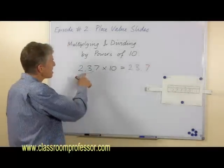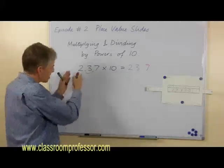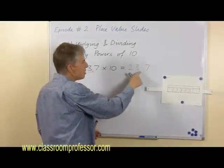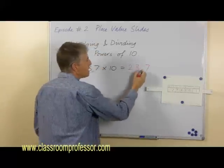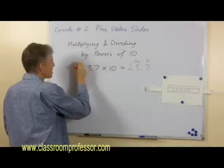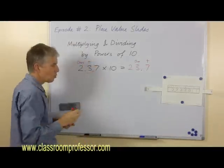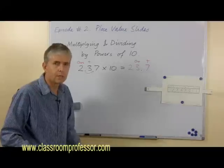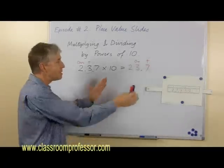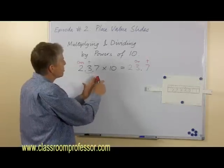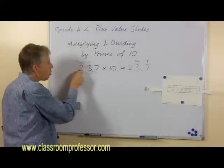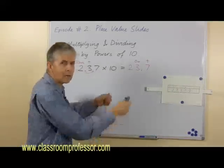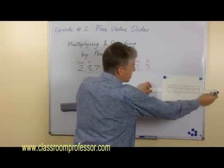Decimal points don't move. A decimal point is a marker between the whole part of a number — in this case the 2 — and the fractional part, in this case the 0.37 or the 3 tenths and 7 hundredths. When we get the new number 23.7, the decimal point is still between the ones and the tens, just as it was before. So really the decimal point didn't move. If we tell our students to just move the decimal point, we're not stating what's really happening. Decimal points are not moving — the digits themselves are moving.